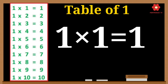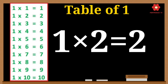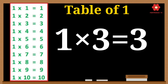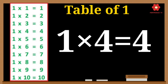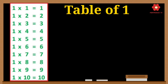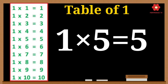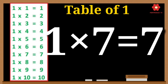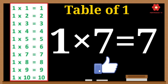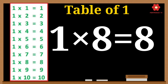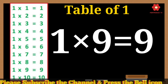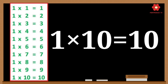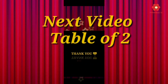One times one is one. One times two is two. One times three is three. One times four is four. One times five is five. One times six is six. One times seven is seven. One times eight is eight. 1, 9's are 9. 1, 10's are 10. Please subscribe the channel for more videos and press the bell icon.